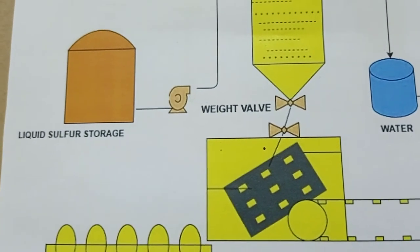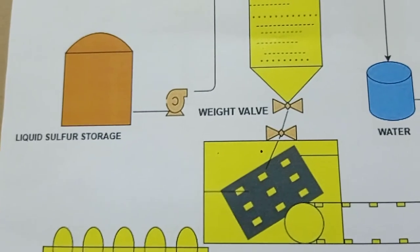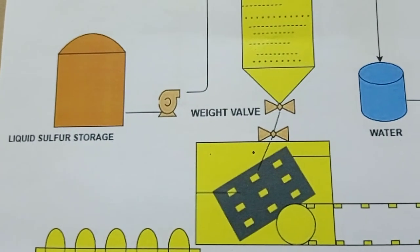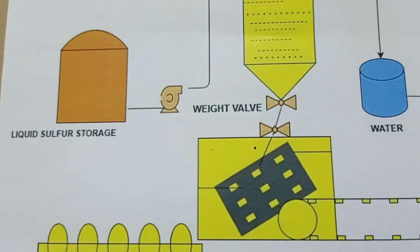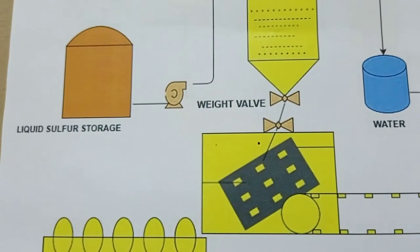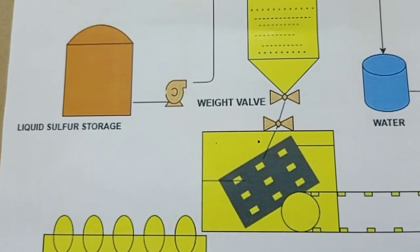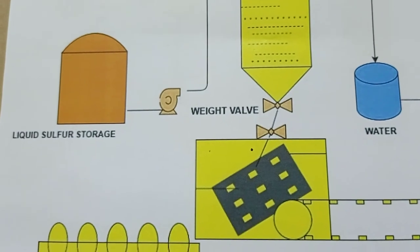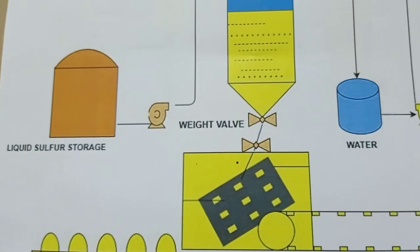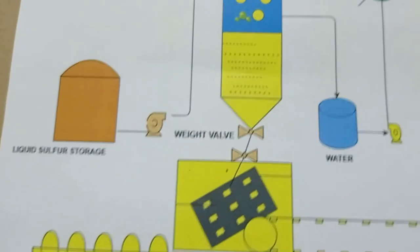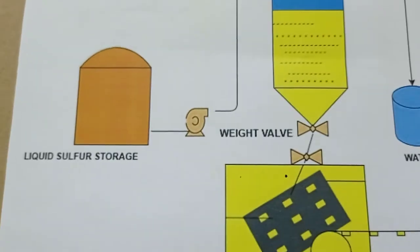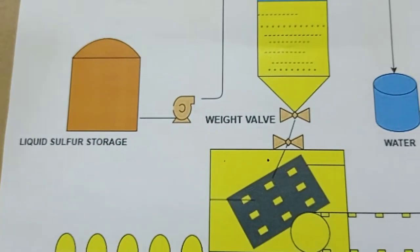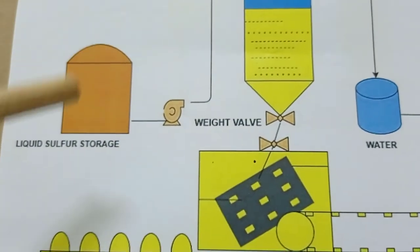Maintaining sulfur temperature in the correct range is important. As temperature increases or decreases, the viscosity of sulfur changes. At low temperature, sulfur solidifies; at high temperature, vapor is generated and viscosity changes. So it is better to maintain temperature within a defined range.